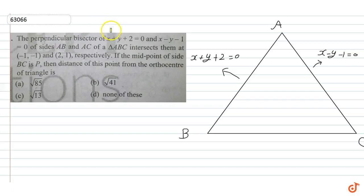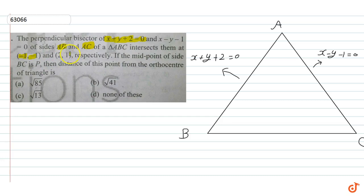The perpendicular bisectors of sides AB and AC of a triangle — given by x+y+2=0 and x-y-1=0 — intersect them at (-1,-1) and (2,1) respectively. If the midpoint of BC is P, then find the distance of point P from the orthocenter of the triangle.